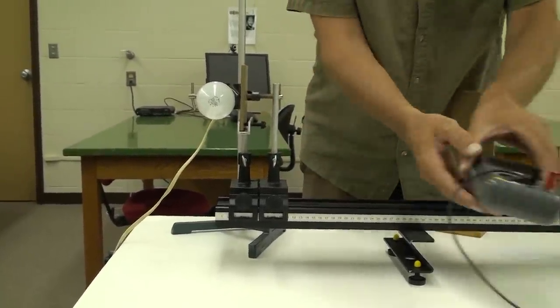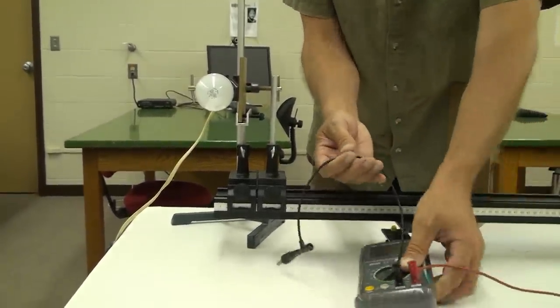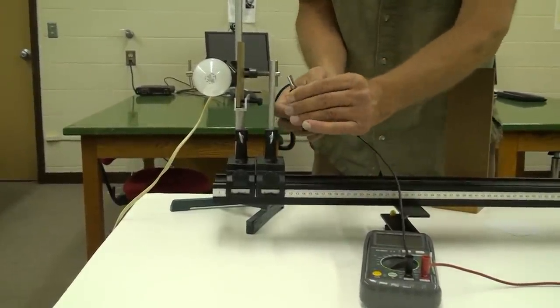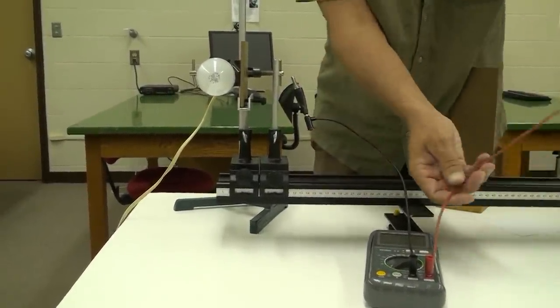Use alligator clips to attach the voltmeter. From now on, we will use the term intensity when referring to the voltage reading since they are proportional.